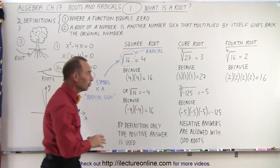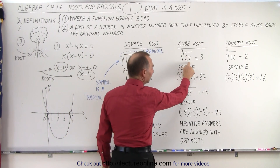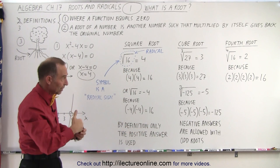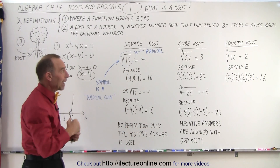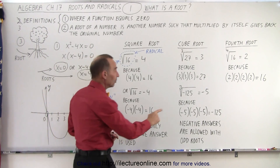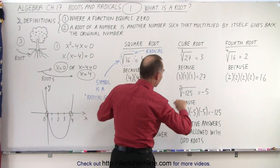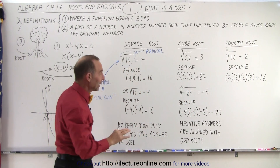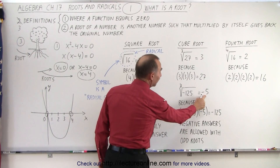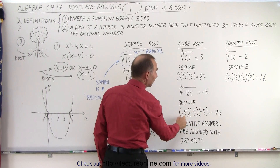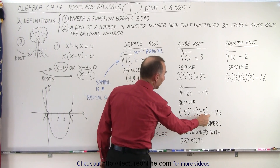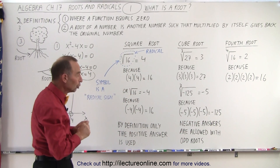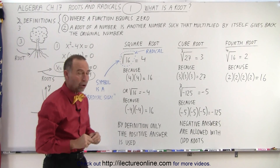For a cube root, the cube root of 27 is equal to 3, because if we multiply 3 by itself 3 times — 3 times 3 times 3 — we get back 27. Or, the cube root of negative 125 is equal to negative 5, because negative 5 times negative 5 times negative 5 is indeed negative 125. It's acceptable that with cube roots, negative answers are allowed.